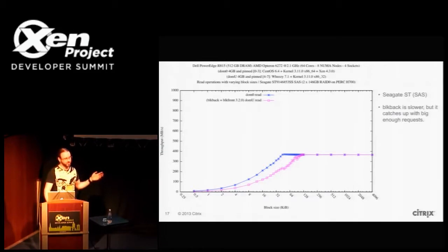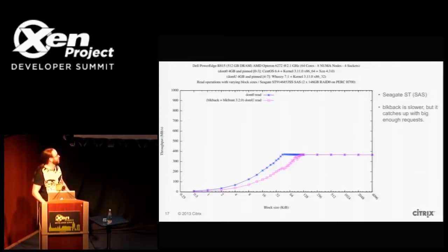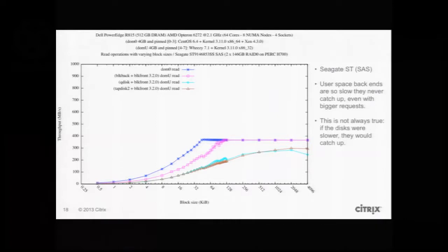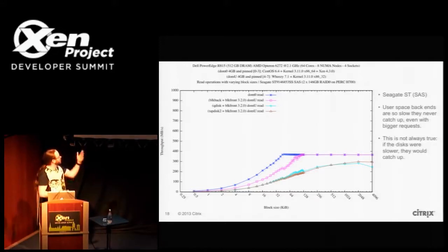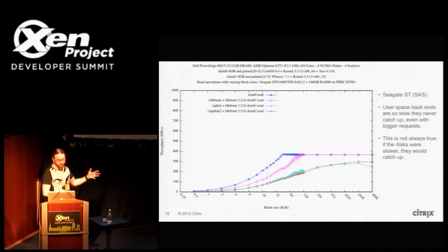Adding measurements from a disk plugged using block front 3.2.0 — I used that version instead of 3.11 because 3.11 has persistent grants implemented, which I'll discuss later; I wanted to show what we'd normally see — with block back plugged directly to the block layer (the upstream Xen case), and comparing with discs attached through tap disk, block tap, and QDisk, we see that the user space alternatives never really match the throughput seen either with block back, from DOM0, or on bare metal. There's CPU overhead, a longer data path, and added latency.